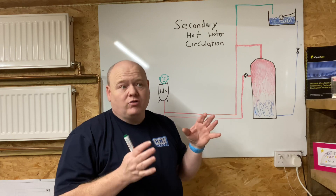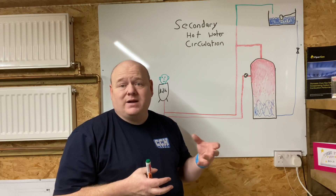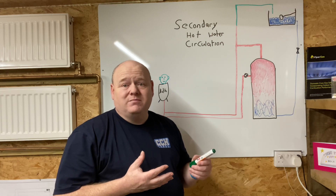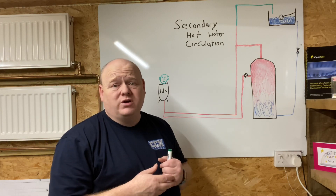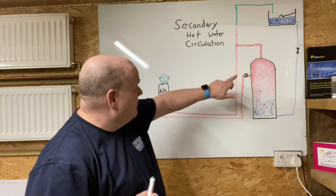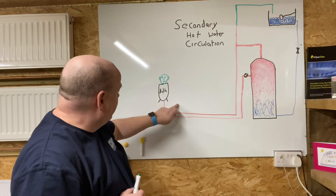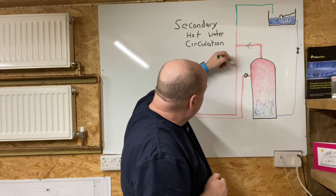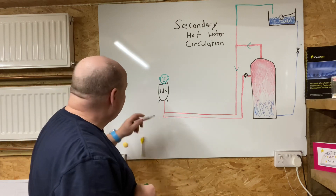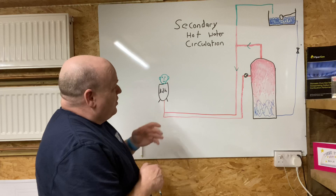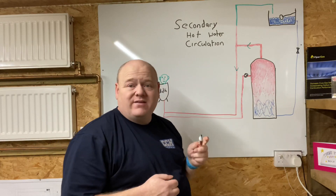On small domestic systems we tend to just put up with the fact that it takes a while, but if you've got a slightly larger system you could put a pumped return on. How a pump return works for your hot water: imagine your normal hot water cylinder with hot water coming off it going off in this direction to a bath. What a secondary return does is make this into a loop, so instead of having dead legs in the system you create a circuit.